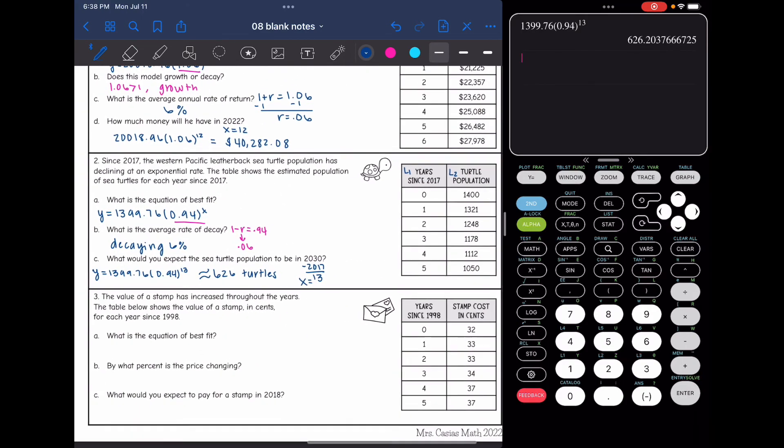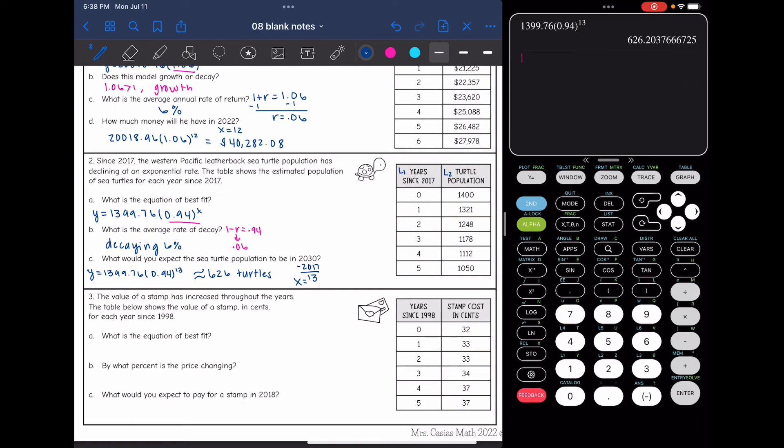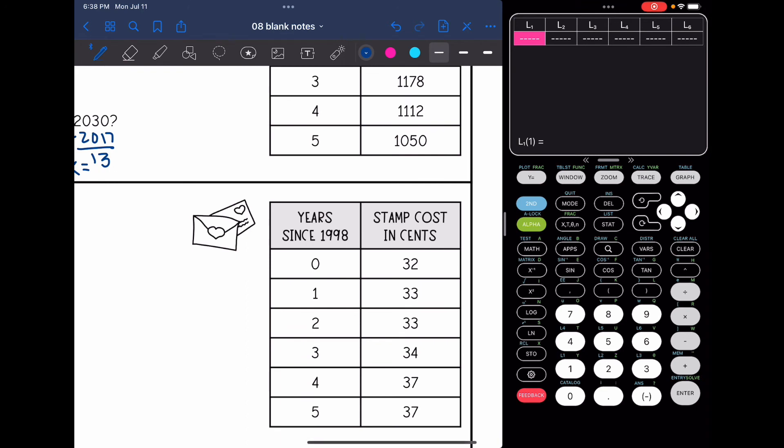Okay, last example. It says the value of a stamp has increased throughout the years. The table below shows the value of a stamp in cents for each year since 1998. And it's asking us for the equation of best fit again. So let's go to our stat plot by doing stat, enter. And I'm going to delete the values underneath L1 and L2.